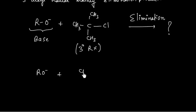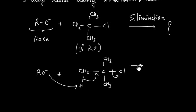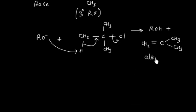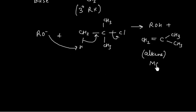When RO⁻ acts as a base with a tertiary alkyl halide, it pulls a proton from the beta carbon, and Cl⁻ leaves simultaneously. So we will have ROH plus an alkene — for example CH₂=C(CH₃)₂ — as the major product. Some substitution side product will also be obtained, but that will be the minor product. So alkene is the major product in this case.